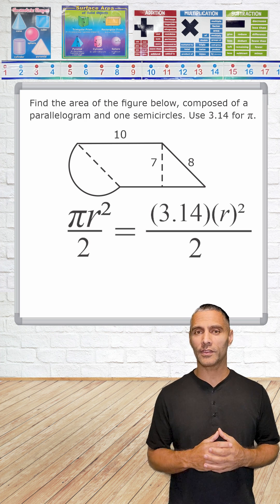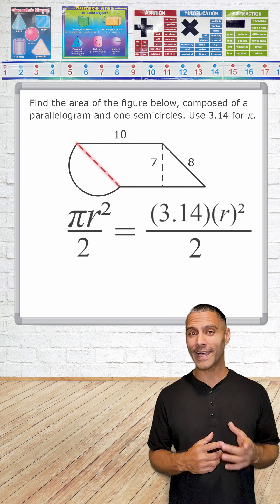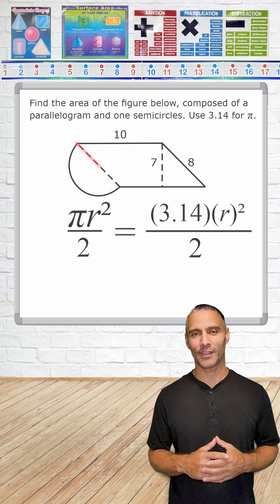As you can see, one of the sides of the parallelogram is 8, which means its opposite side must also be 8, which is the diameter of our semicircle. So we just cut that in half to get our radius.